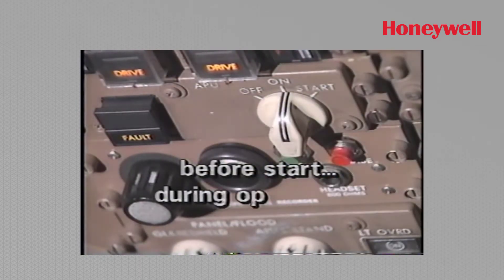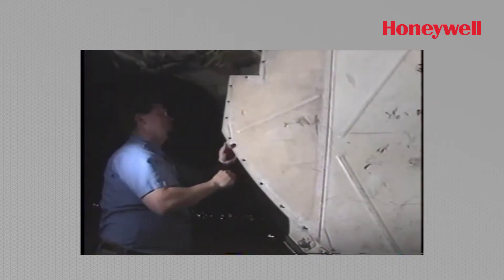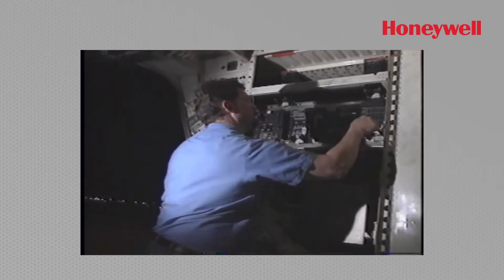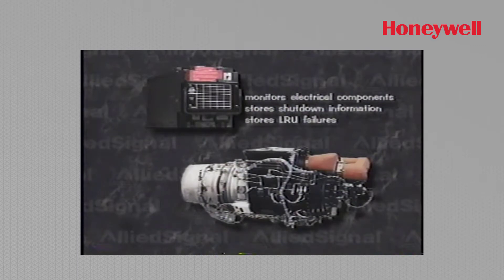The ECU performs BITE before start, during operation, and during shutdown. Located inside the aft cargo door behind removable panels, the ECU continuously monitors the APU's electrical components, stores shutdown information, along with LRU failures. It also provides diagnostic information of APU pneumatic availability.